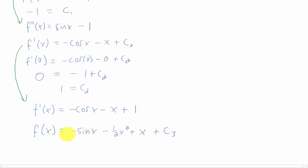We can check that really quickly. If we take a derivative of this function, we should get negative cosine x minus, we'd get 2 times 1 half, which is 1, x to the first power, plus 1, which is great, plus 0. Great.